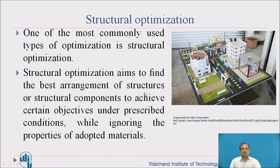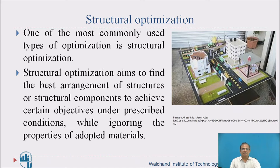Structural optimization is one of the most commonly used types of optimization. It aims to find the best arrangement of structures or structural components to achieve certain objectives under prescribed conditions, while ignoring the properties of adopted materials. Structural optimization uses section properties to optimize particular structural components. Different materials such as steel and concrete are used in construction, and their optimization is very important so that economy can be observed and the best possible structural component can be obtained.